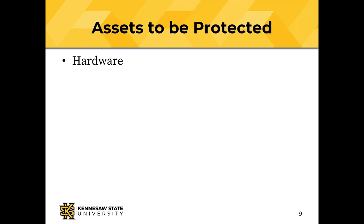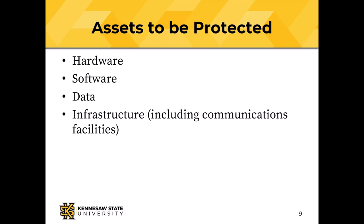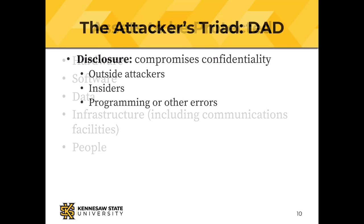We need to know what assets we're trying to protect. We need to protect hardware — if it's stolen or fails, we can't compute. We need to protect software for the same reason. We need to protect data, where many organizations have recently fallen down due to data breaches. We need to protect infrastructure, including communications facilities. We also need to protect people — a manager with an indispensable employee has made a mistake, but you can't operate without your staff.